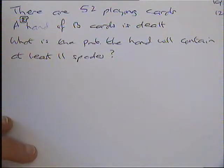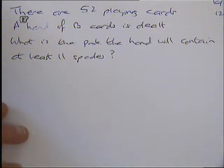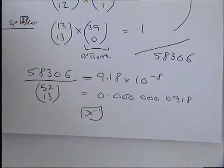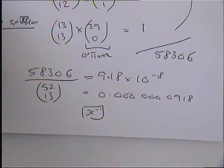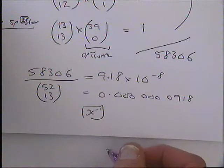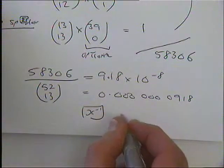So, 52 playing cards, we're choosing 13 cards, a hand of 13 cards is dealt, and we want to know the probability there are going to be at least 11 spades in that hand. Right, it's a probability, so start it the way we've always started these. That means it's a fraction, the number on the top and the number on the bottom.